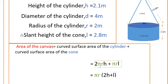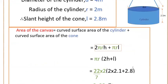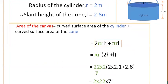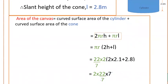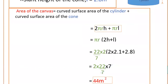That equals 2 times 22 by 7, π is 22 by 7, into r. Here r is radius, so 2 times 2 times h. H is height of the cylinder, that is 2.1 meters. So 2 times 2.1 plus l is slant height, that is 2.8 meters. So that equals 2 times 2 times 22 by 7 into, if you multiply 2 times 2.1 plus 2.8, that is 7.